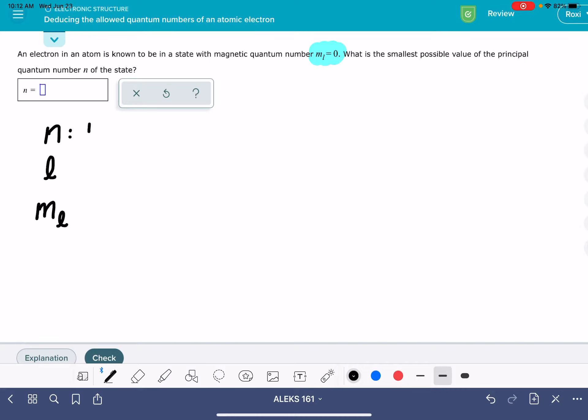For quantum number n, the possible values start at one and work their way up through the integers, theoretically going all the way to infinity. Quantum number l starts at zero and works its way up in the same pattern through the integers. However, the maximum possible value of l is going to be n minus one. So the value of n dictates the highest possible value of l.